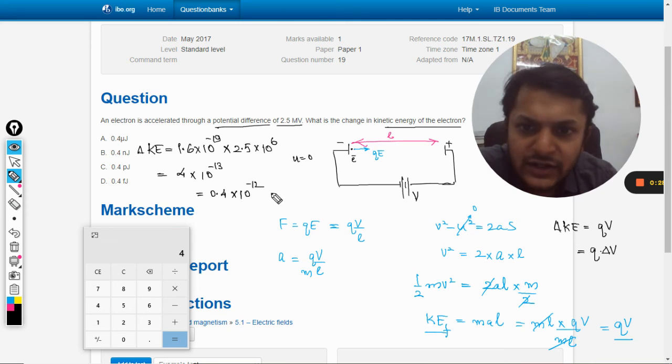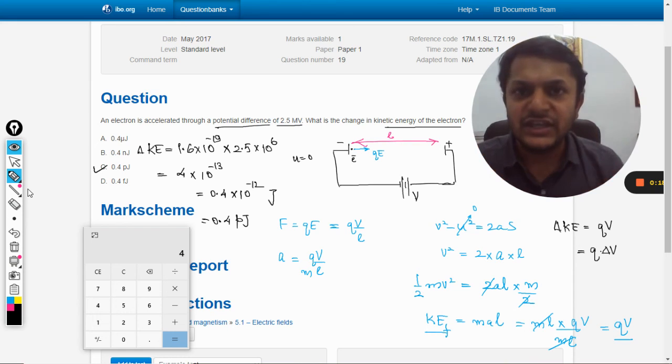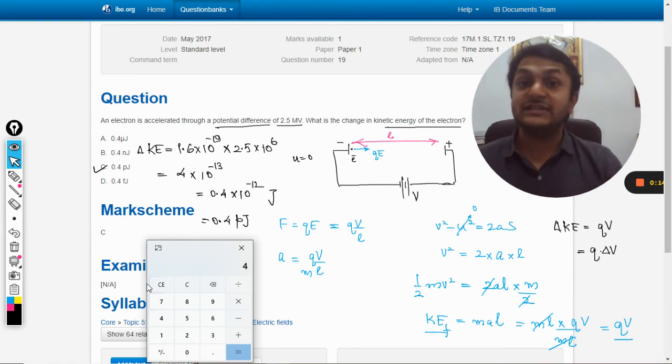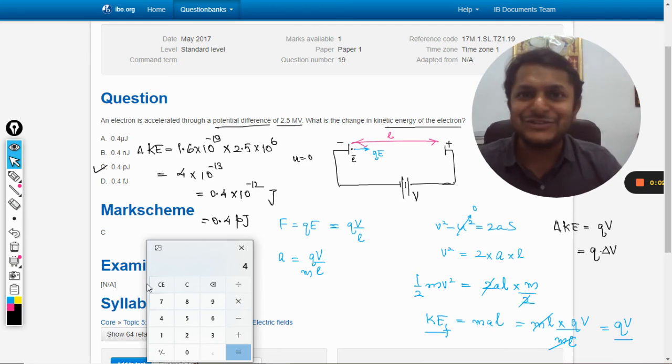Minus 12 joules, so this is pico joules. So definitely our answer should be C. Let us verify from the mark scheme and yes the answer is C. So to do this question you can do two things: one is to understand the complete concept and do the complete thing every time, and the other thing is to apply the formula. So with this, all the best, bye.